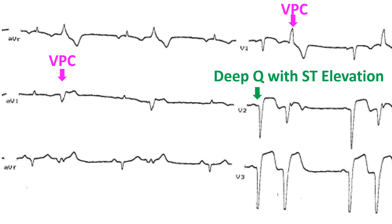If it does produce hemodynamic problems, which is quite unlikely due to the medium rates, it can be overridden by accelerating the sinus node with intravenous atropine. The advantage of sinus rhythm is of course the AV synchrony, which is useful in the setting of myocardial infarction with systolic and diastolic dysfunction. Interventricular and intraventricular synchrony will also be better with sinus rhythm. AIVR is also sometimes called slow VT.